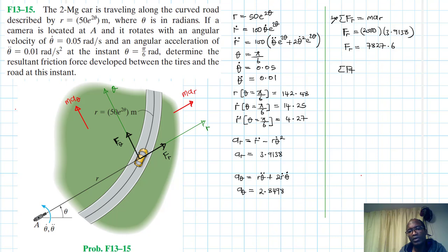Then we have summation of forces in the theta direction. Going in this direction, and this is just equal to M A_theta. So this is just equal to our M is 2000, and our A_theta we just calculated is 2.8498. And F_theta is just equal to 2000 times 2.8498. So this we get 5699.6. These are all newtons.